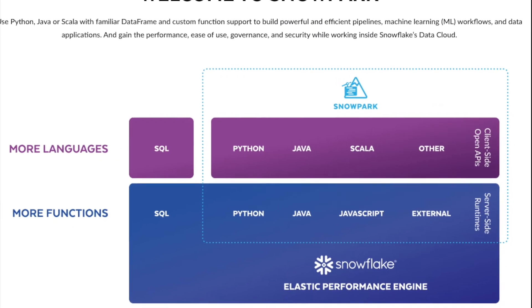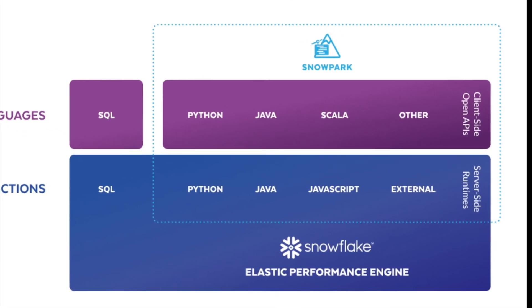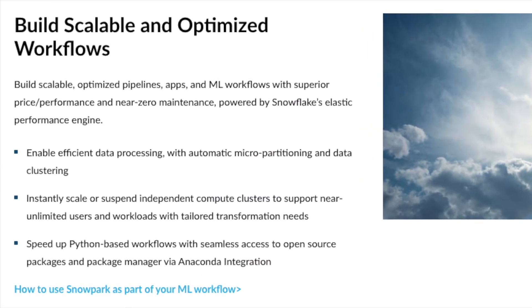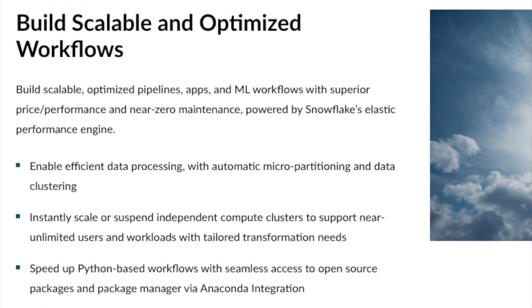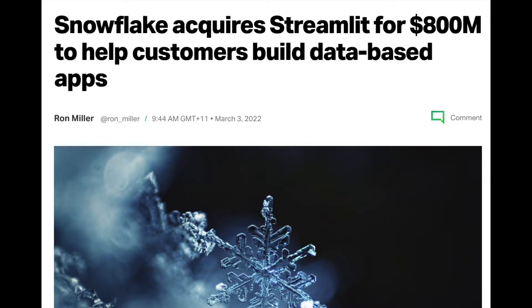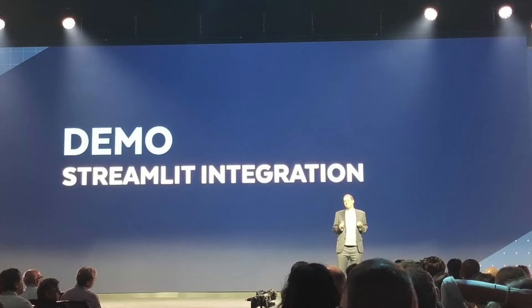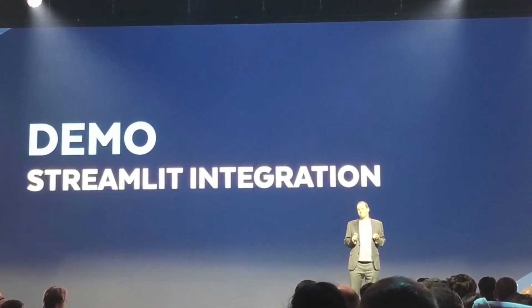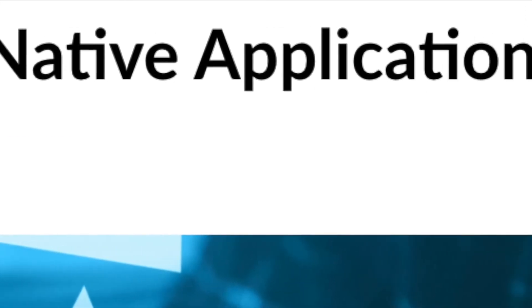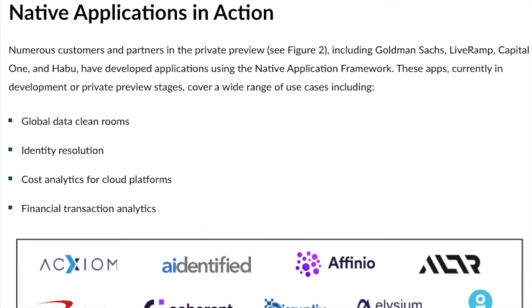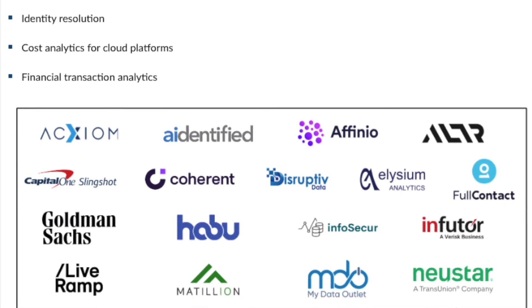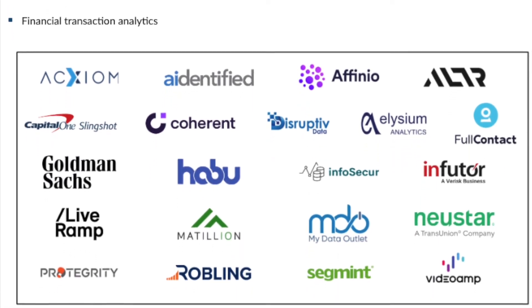Moving on to application development — we mentioned Snowpark for Python. Snowpark is Snowflake's developer framework, allowing you to build and deploy AI/ML applications within Snowflake without needing to move data outside the platform, tapping into the scale and performance of Snowflake. There's now native Streamlit integration following Snowflake's acquisition of Streamlit, meaning you can expose data through interactive user interfaces to business users. We've also got the native application framework, currently in private preview, which allows you to easily monetize data applications from within the Snowflake data marketplace, with serverless deployment managing all the typical challenges of building and deploying data applications.